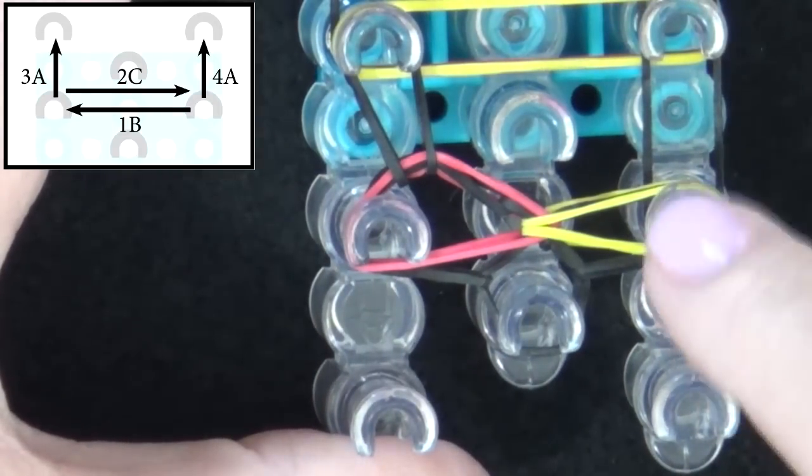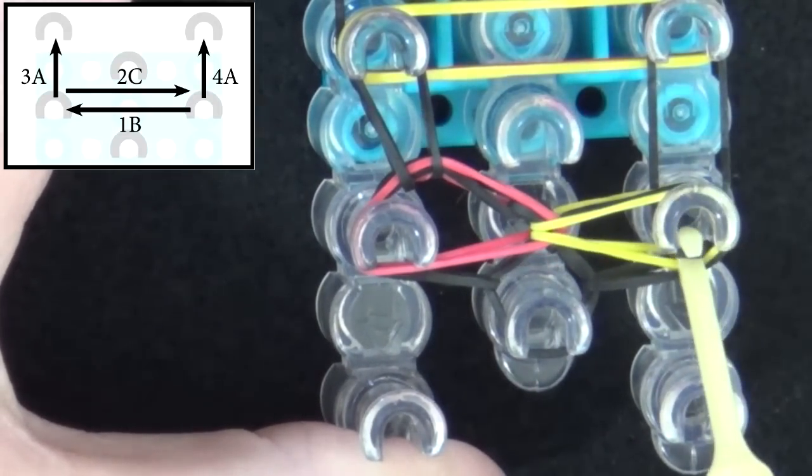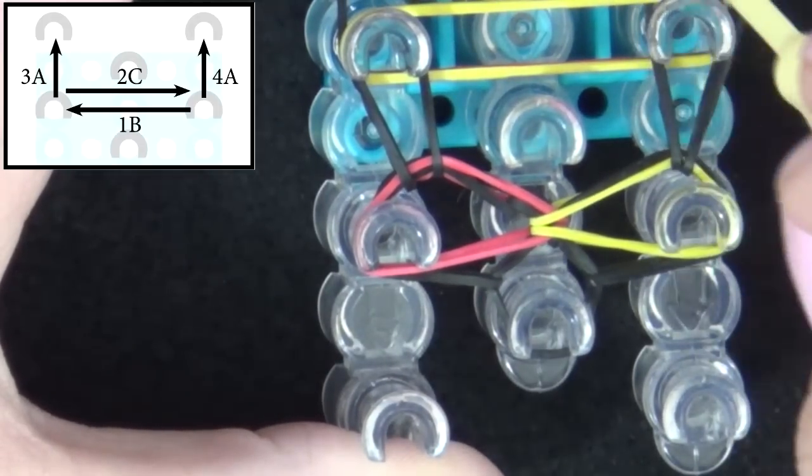Number four will be looping this band, so you pull all those back, get that in your hook, and you pull it forward.